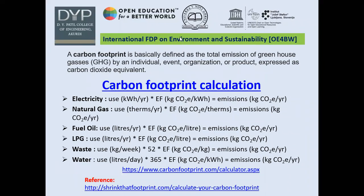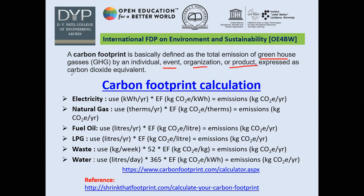For that purpose, we will first learn what carbon footprint is and how it is calculated. Carbon footprint is basically defined as the total emission of greenhouse gases by an individual, an event, an organization, or a product, and it is expressed as carbon dioxide equivalent. Methane and carbon dioxide are the main greenhouse gases that make up the carbon footprint. We will now look at the formula for carbon footprint calculation.